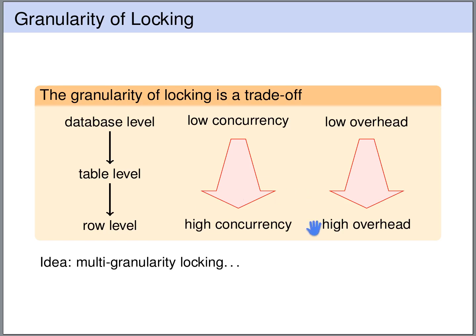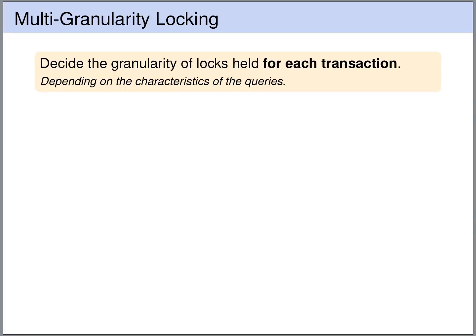The idea is to use multi-granularity locking that decides the level of the locks depending on the query — whether we lock only rows or we lock entire tables. The granularity of the locks is determined by the characteristics of the query.